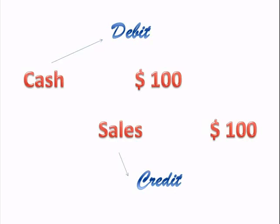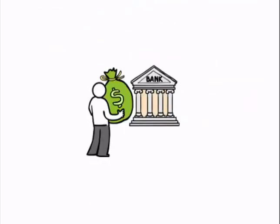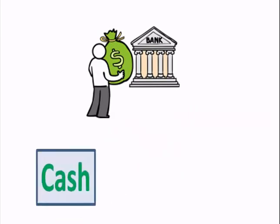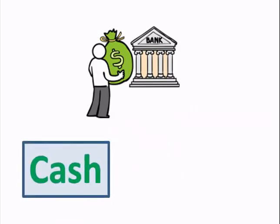Let's take another example of a business that needs cash and goes to a bank. The bank approves the loan and provides the cash. But that's only one side of the transaction — the other side is that the business has a liability.